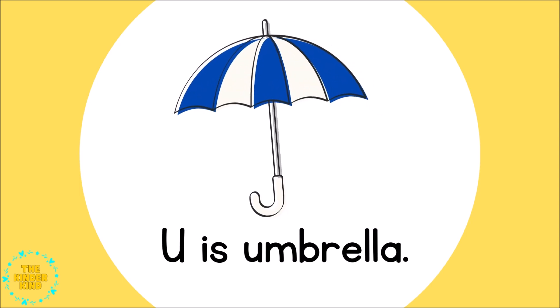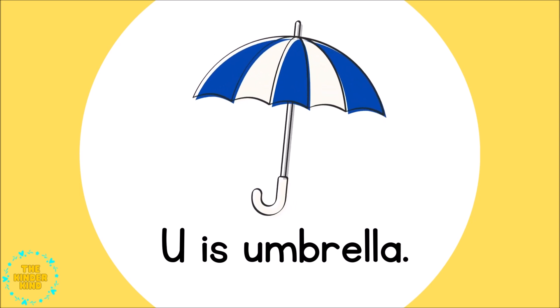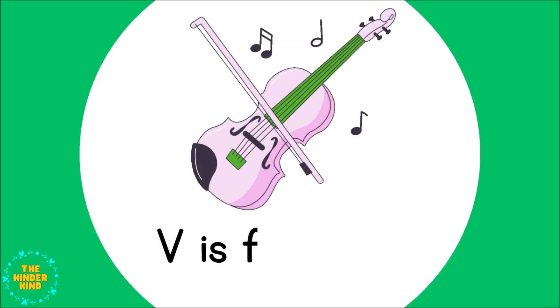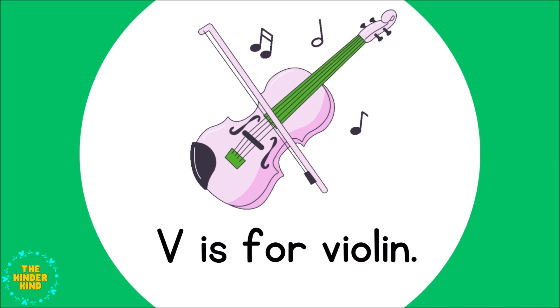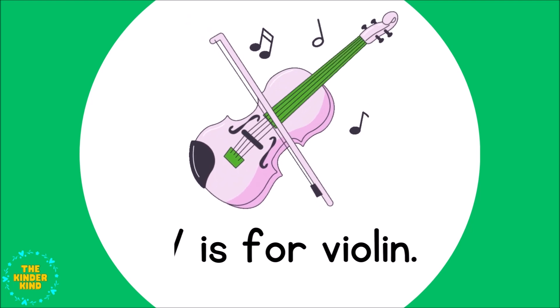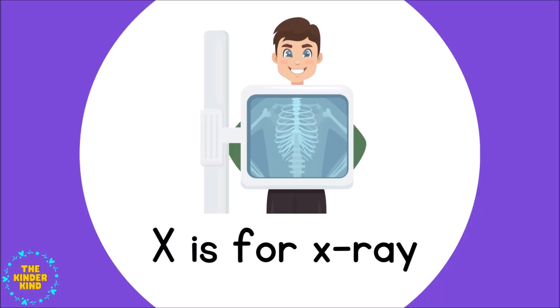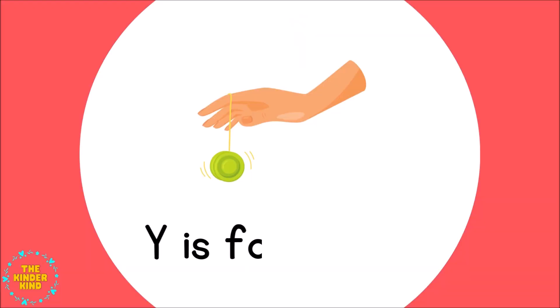U is for Umbrella. U U Umbrella. V is for Violin. V V Violin. W is for Watermelon. W W Watermelon. X is for X-Ray. X X X-Ray.